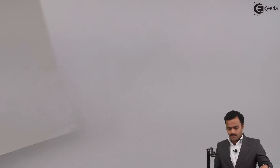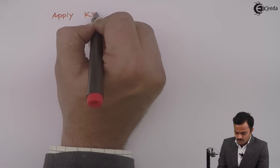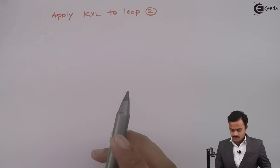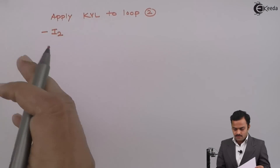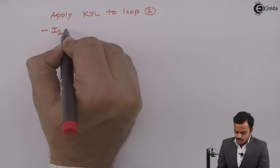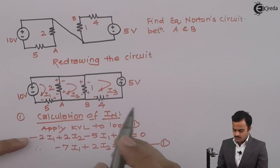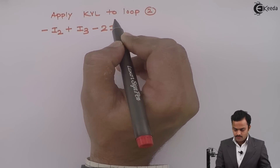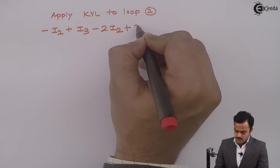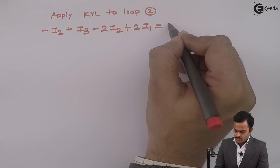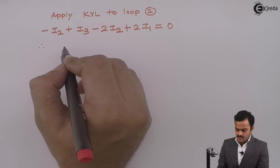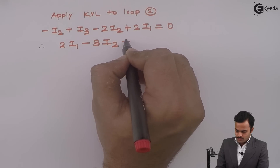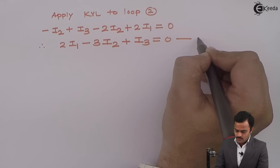Applying KVL to loop number two, starting from this point: minus I2 plus I3, then plus 2I2 and minus 2I1. Since there is no battery in this loop, the constant is zero. Simplifying, I get 2I1 minus 3I2 plus I3 equals 0 — equation number two.